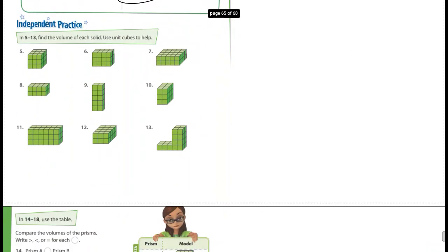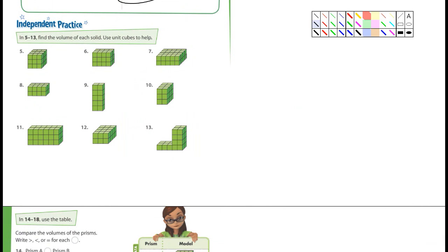Go down to 5 through 13. It says find the volume of each solid. Use unit cubes to help. You don't have to draw these. They're just asking you to find the volume. So I want you to do 5, 6, 7, 8, 9, 10, and 11, 12, 13.